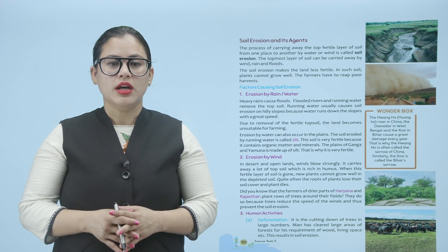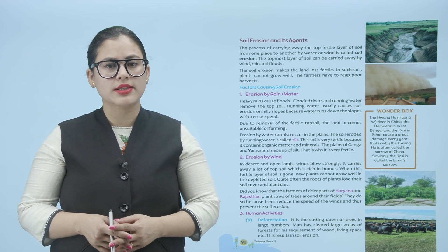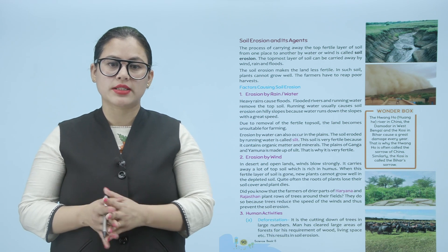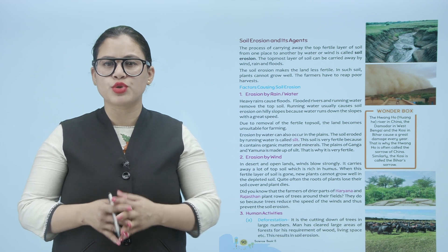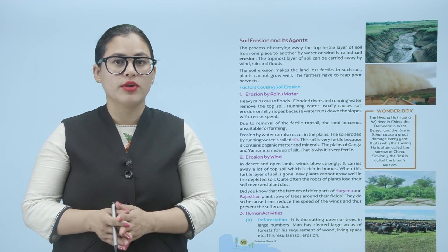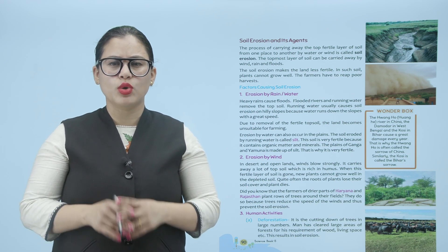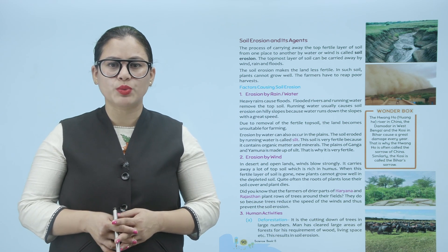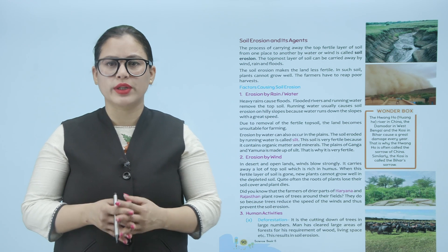Human activities — deforestation: it is the cutting down of trees in large numbers. Man has cleared large areas of forest for his requirement of wood, living space, etc. This results in soil erosion. Human activities bhi soil erosion mein important role play karti hain. Deforestation means large-scale cutting down of trees. Agar aap trees large scale pe kaato, forests, toh man ke requirement ke liye space chahiye — so this causes soil erosion.